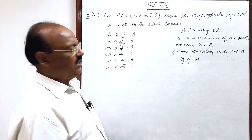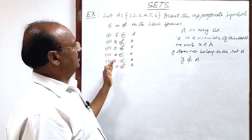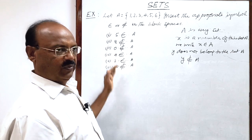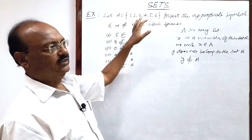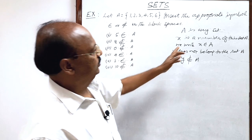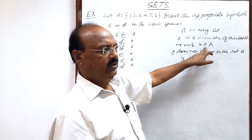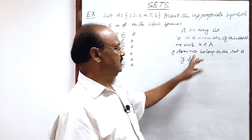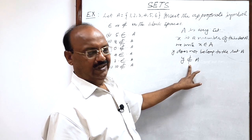Just we have to check whether a number or element or member is belonging to the set or not. If belongs to, you use this notation. If the element is not belonging to this set, then we will use this notation. Very simple.